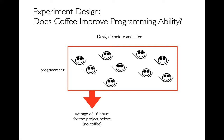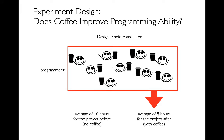We could take all of our people, give them no Copilot, ask them to do a programming project, and measure on average how long it takes — say 16 hours. Then we could erase all their code, give them Copilot, and ask them to do it again — maybe it takes eight hours. The big concern here is that maybe it wasn't about Copilot. Maybe they just got better and more experienced from the first time to the second time.